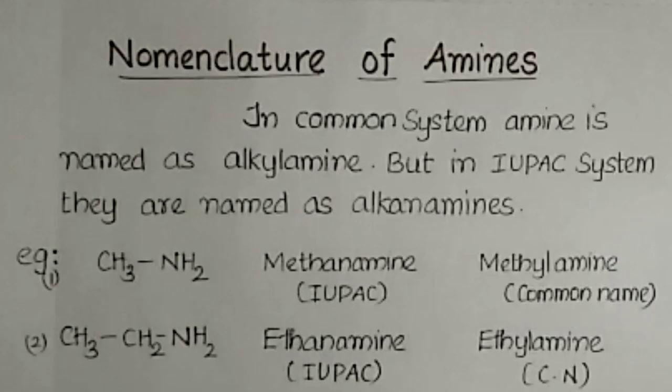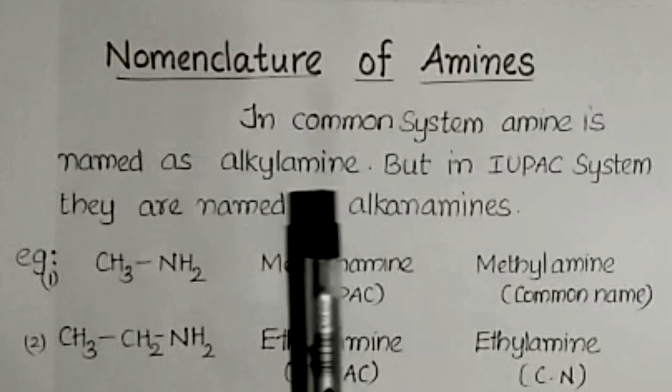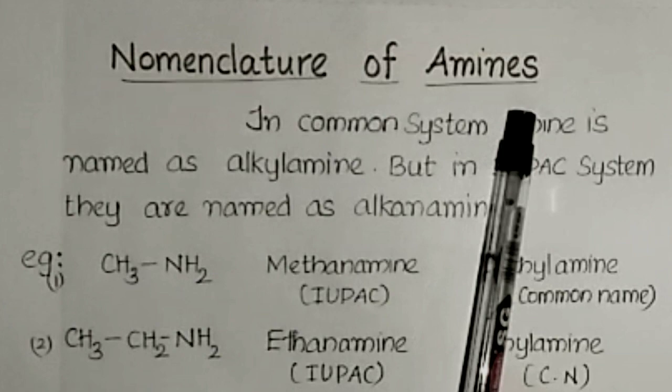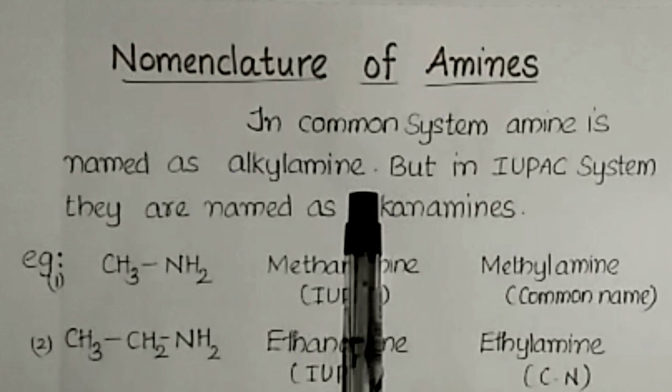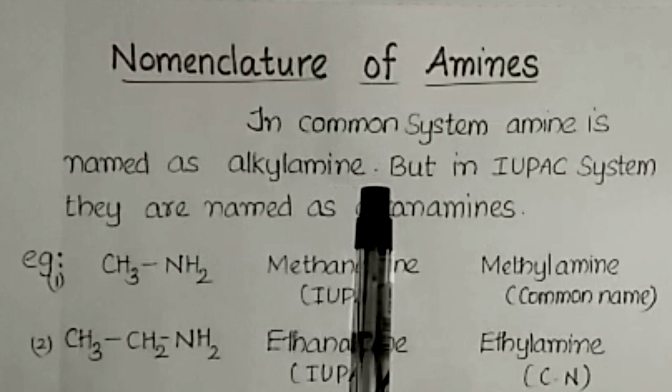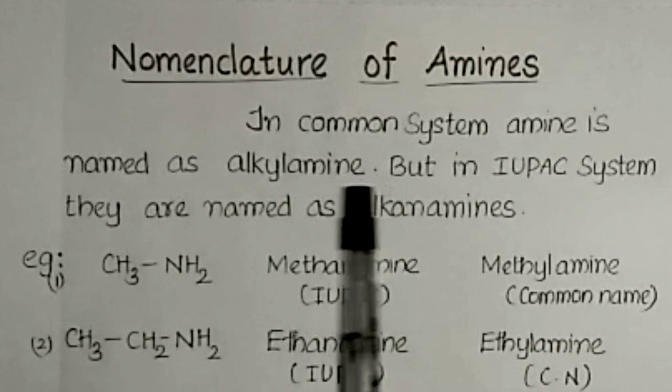Next, nomenclature of amines. Nomenclature means naming. In the common system, amines are named as alkyl amine. For example, one carbon atom containing alkyl group gives methylamine, then ethylamine, propylamine, butylamine, etc.